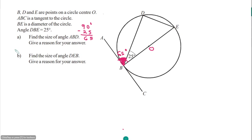To find angle G: we have a straight line, and 180 minus 100 gives 80 degrees for one angle. Since opposite angles of the cyclic quadrilateral add up to 180, G equals 180 minus 80 equals 100 degrees.